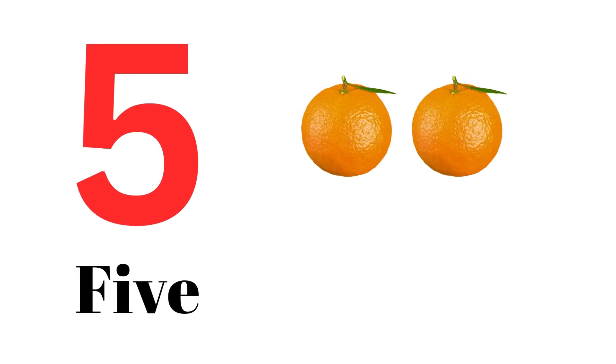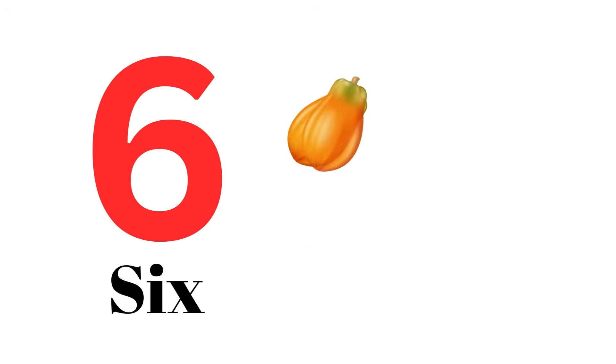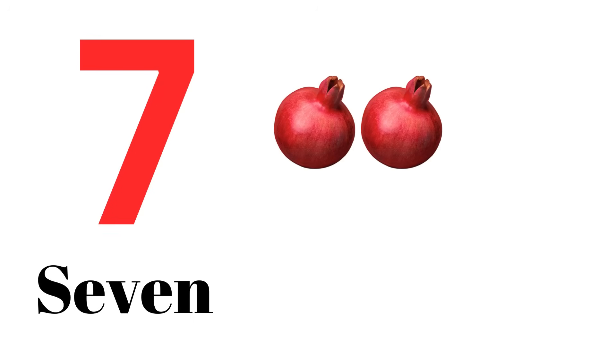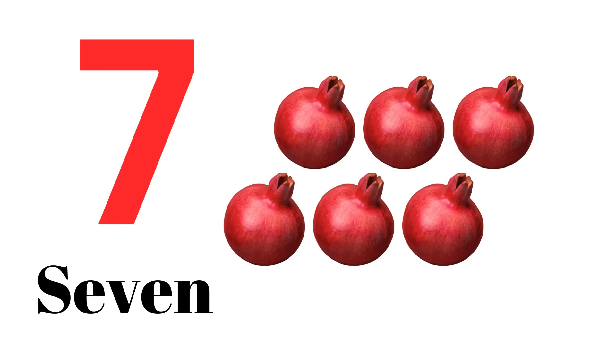Five: one, two, three, four, five — orange. Six: one, two, three, four, five, six — papaya. Seven: one, two, three, four, five, six, seven — pomegranate.